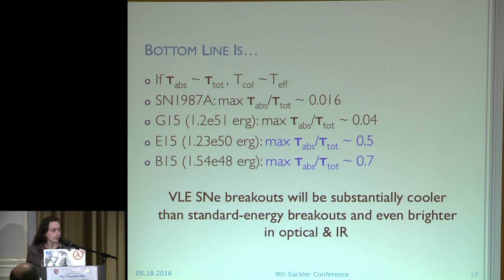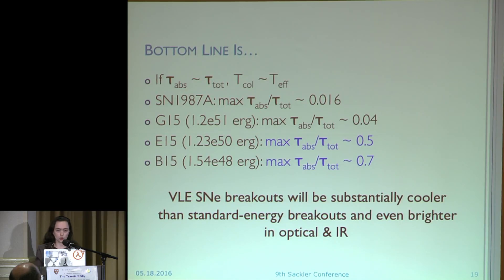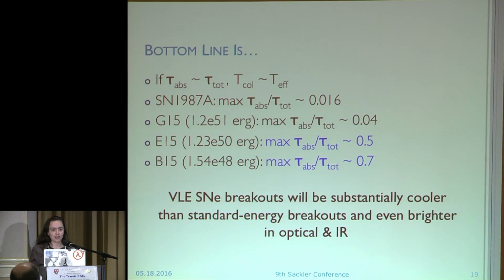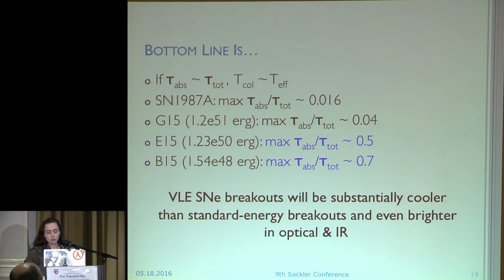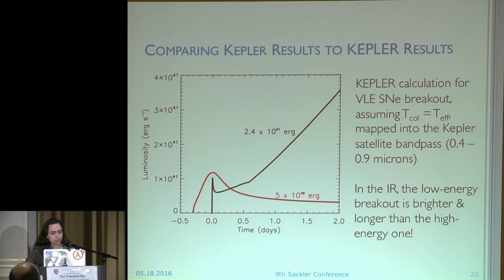If the absorptive opacity is roughly equal to the scattering opacity, we expect the color temperature to become roughly equal to the effective temperature. These are the ratios for our models of the maximum absorptive to total optical depth. In supernova 1987A, the absorptive opacity never really goes above 1% of the total opacity. In our more standard breakout, 4%. But as you start dropping in energy, you get much bigger fractions — much bigger ratios of absorptive optical depth to total optical depth. The bottom line is that breakouts from very low energy supernovae will be substantially cooler than those from standard energy supernovae, and this will make them even brighter in the optical and the IR.